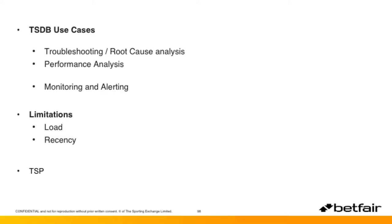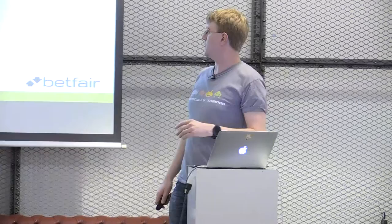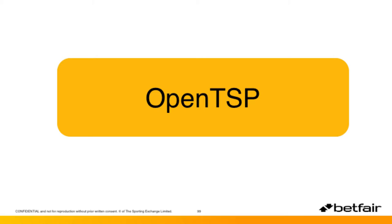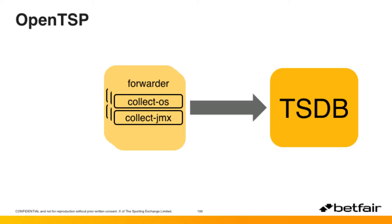This is the point at which my predecessors decided to write TSP. TSP — in yet another inspired naming scheme — stands for Time Series Pipeline. We had a couple of people in the office who wanted to call it Bernard for some reason, but they're weird. The first component is what we call the forwarder, and the sharp-eyed among you will notice it looks very similar to something you saw a few minutes ago — it just says 'forwarder' instead of 'tcollector.'